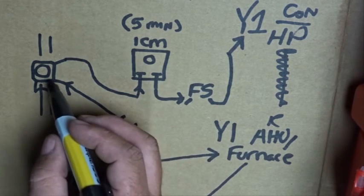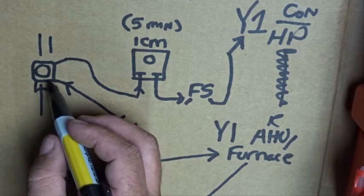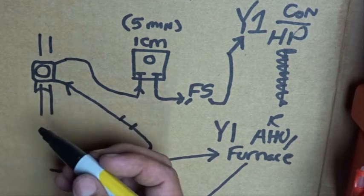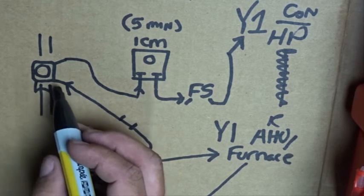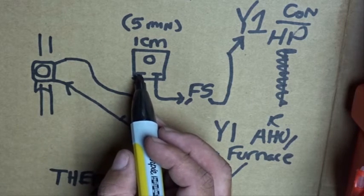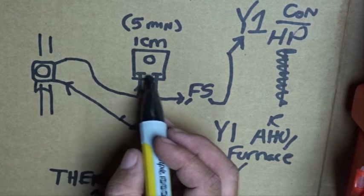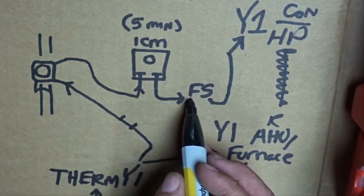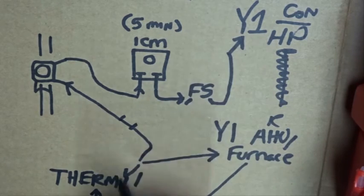So we're going to have Y1 signal going to the freeze stat. If it's closed because it's warm enough on the pipe above 35 degrees, it's going to let it pass in and out of the timer. After the timer removes its five minute warning, it's going to go on to the float switch and then head on to the unit as long as the float switch isn't blocked.